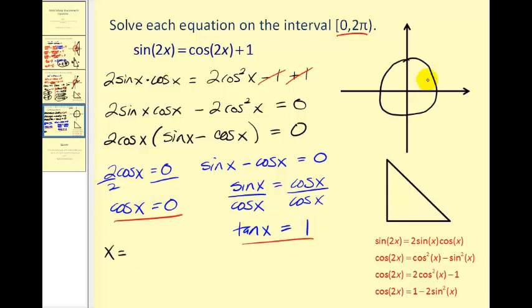Remember on the unit circle cosine theta equals x. So we want the points on the unit circle where the x coordinate would be zero. Those occur on the y axis. So on this interval we would have pi over two radians. And also three pi over two.